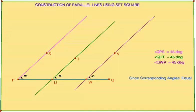Since the corresponding angles are equal, we can clearly say that PS is parallel to UT is parallel to WV. In this way we can draw parallel lines to a given line in the plane.